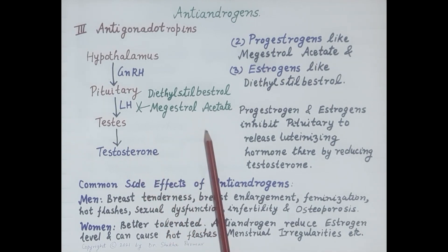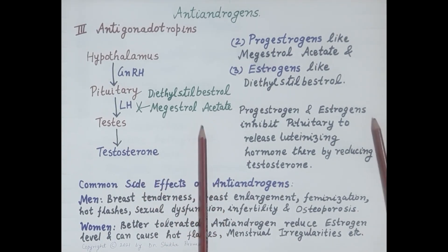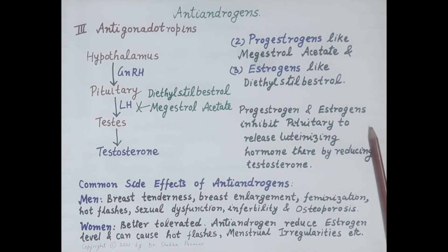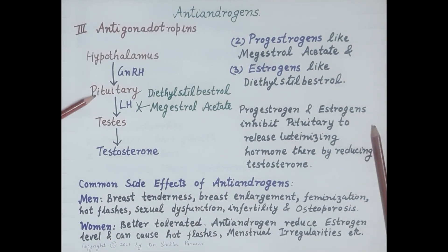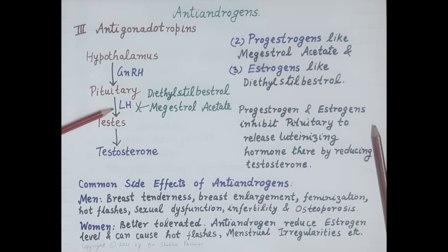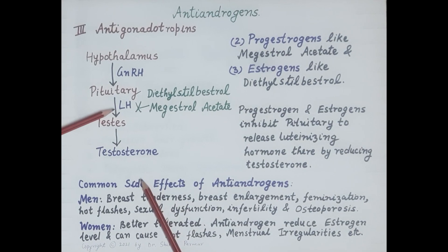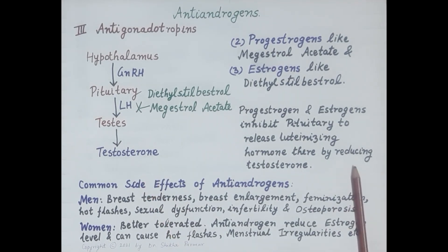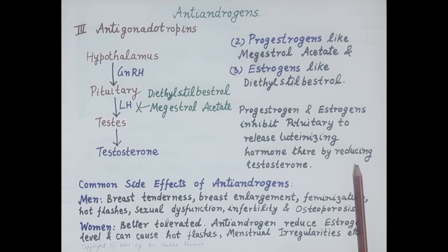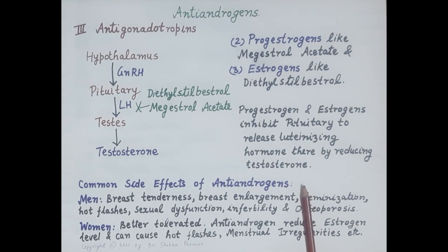The second type of anti-gonadotrophins are progestogens like megestrol acetate, and estrogens like diethylstilbestrol. Progestogens and estrogens inhibit the anterior pituitary from releasing luteinizing hormone, and since there is reduced synthesis of LH, there is reduced synthesis of testosterone — this is how anti-gonadotrophins inhibit androgen levels in the blood.